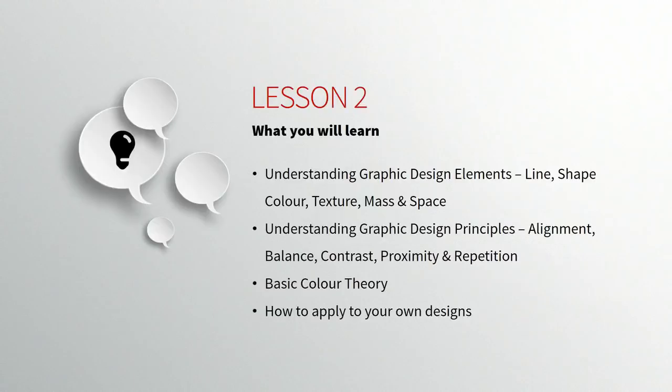So this is what we're going to go through today. Understanding graphic design elements and principles. Our elements are: line, shape, colour, texture, mass, and space. Our principles are: alignment, balance, contrast, proximity, and repetition. We'll also have a look at colour theory — we'll be doing a lot more on that as we progress — and then finally, we're going to learn how to apply these to your own designs.